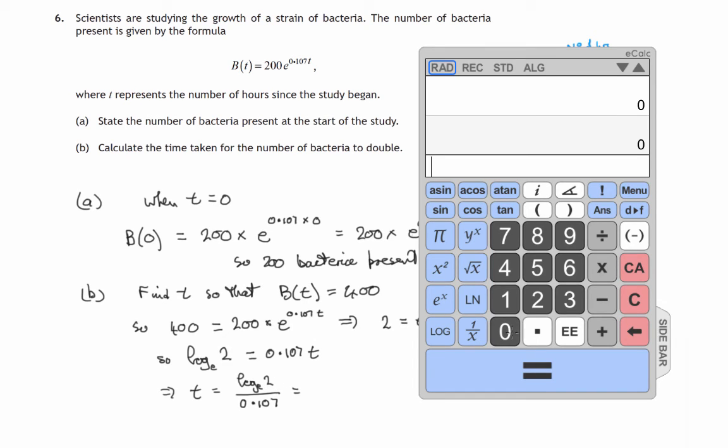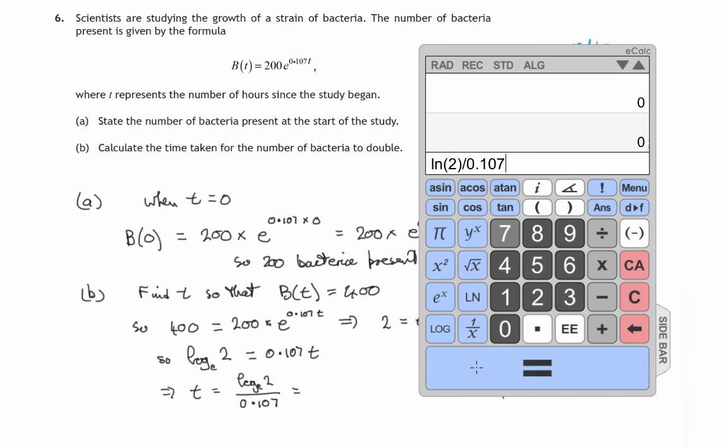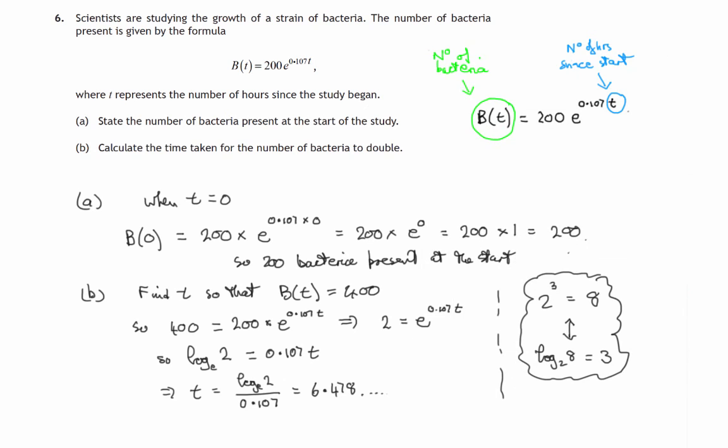Log to the base e of 2 is the natural log, ln of 2. So we'll go natural log of 2, log to the base e of 2, and we'll divide that by 0.107. And that gets us 6.478 and so on. Now the question says calculate the time taken for the number of bacteria to double, and remember t represents the number of hours since the study began. So after 6.5 hours—that's to one decimal place—the number of bacteria will have doubled.